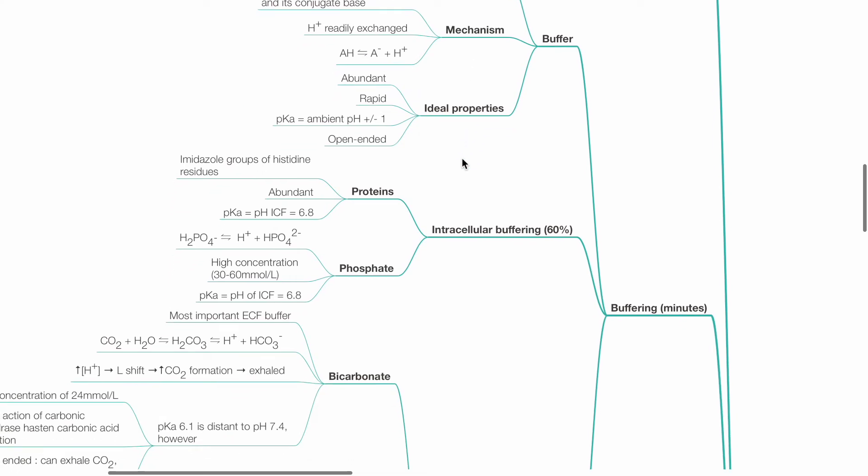Intracellular buffering consists of actions of proteins and phosphate. The imidazole groups of histidine residues of proteins are the main sites of buffering. Intracellular proteins are abundant and have a pKa that approximates pH of intracellular fluid of 6.8. Phosphate buffer: